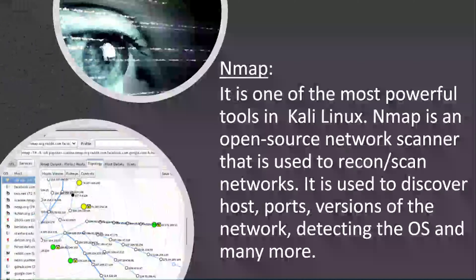Number 1: Nmap. This is one of the most powerful tools in Kali Linux. Nmap is an open source network scanner used to recon or scan networks. It is used to discover hosts, version of network services, detect the operating system, and much more. It is an information gathering tool, and it also has a graphical user interface known as Zenmap.